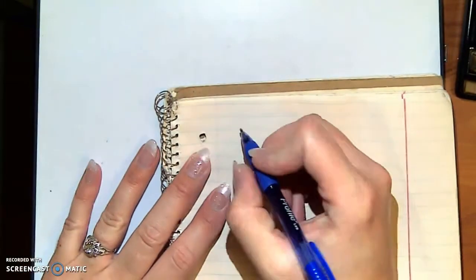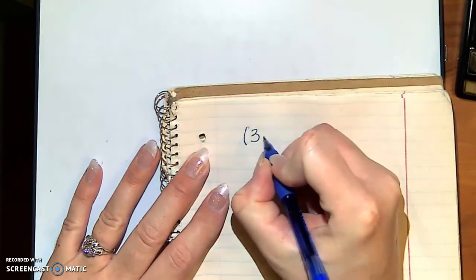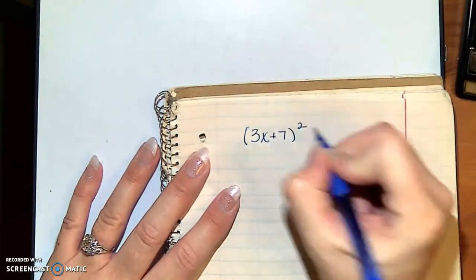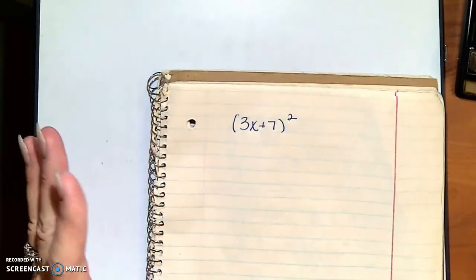Alright, so we're going to do the chain rule for calculus, and I'm going to give you three examples as far as why this works the way it does. For the first example, actually I'm going to use the same example three different times. So if I have 3x plus 7 squared.